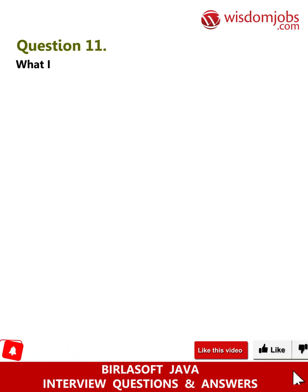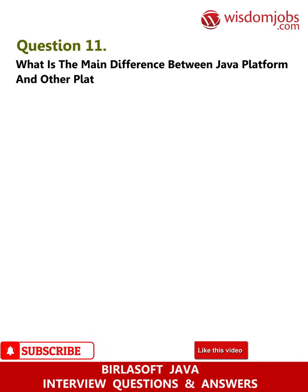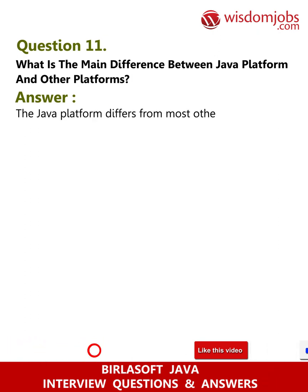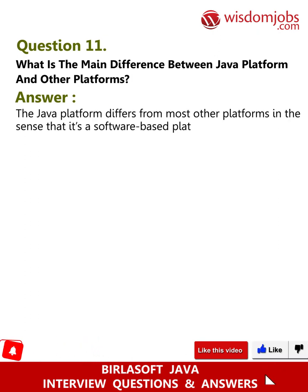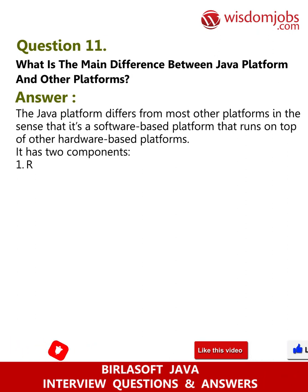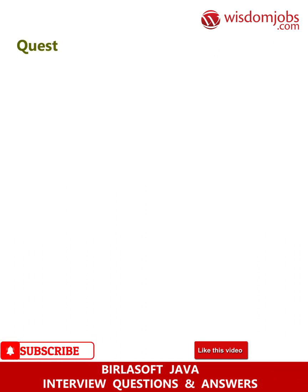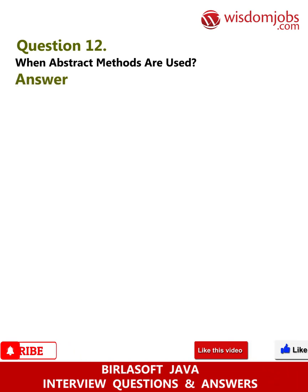Question 11: What is the main difference between the Java platform and other platforms? Answer: The Java platform differs from most other platforms in the sense that it's a software-based platform that runs on top of other hardware-based platforms. It has two components: one, runtime environment; two, API (Application Programming Interface).